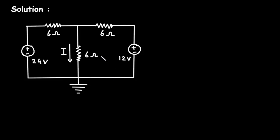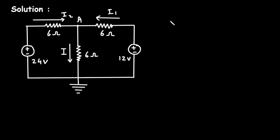We have to assume all the currents towards this reference node. Let's say this current is I1, this current is I2, and this current is I. This is node A. Now we will apply KCL at node A.